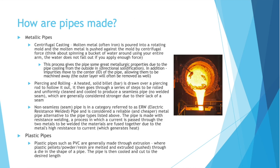How are pipes made? For metallic pipes, you have centrifugal casting. Molten metal, often iron, is poured into a rotating mold, and the molten metal is pushed against the mold by centrifugal force — similar to spinning a bucket of water around using your entire arm. What's great about centrifugal casting is that it gives the pipe excellent metallurgical properties due to the pipe cooling from the outside in, known as directional solidification. In addition, impurities move to the center — the ID of the pipe — allowing them to be machined away, leaving pipe with very good metallurgical properties and few impurities.